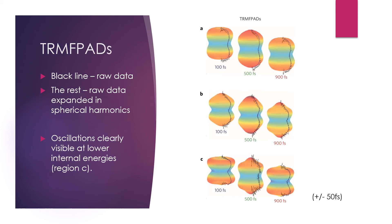Here we can see the angular distributions recorded at roughly 100, 500 and 900 femtoseconds. In black is the raw data obtained using the x, y and time of flight data recorded during the experiment. The 3D shapes were obtained by fitting the raw data to an expansion in spherical harmonics. There's a few things to point out.